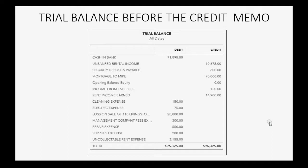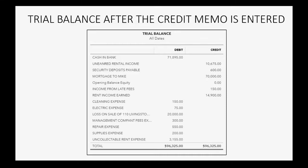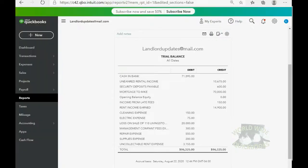This is the trial balance before we record the credit memo that will apply the tenant's last month's rent to the security deposit. Security Deposits Payable will decrease by the $900 deposit Harry Houdini gave, so a $600 credit will become a $300 debit — Security Deposits Payable will switch to the debit side. Unearned Rental Income, which represents all tenant balances, will become $11,575 as it becomes more negative on the credit side.